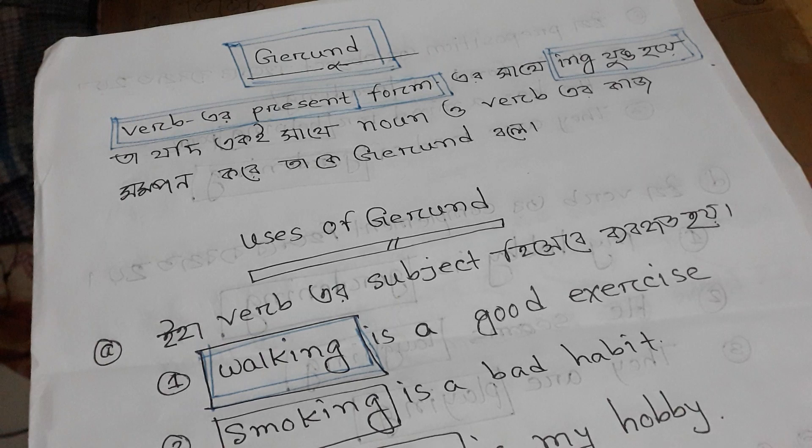First of all, there are three parts of the verbals, which are the infinitive, the gerund, and the participle of the verbals.